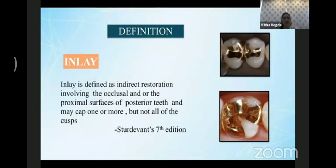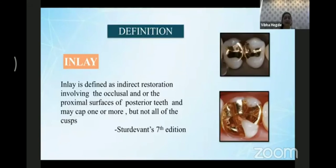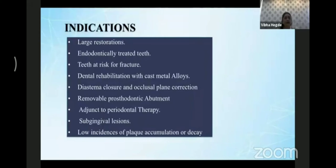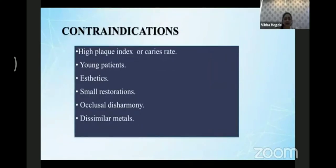An inlay is defined as an indirect restoration involving the occlusal and proximal surfaces of posterior teeth, and may cap one or more but not all of the cusps — that is the most important thing to remember. Indications include large restorations, endodontically treated teeth, teeth at risk for fracture, dental rehabilitation with cast metal alloys, diastema closure, occlusal plane corrections, prosthodontic abutment, adjunct to periodontal therapy, subgingival lesions, and low plaque index. Contraindications are high plaque index, young patients, aesthetic concerns, small restorations, occlusal disharmony, and dissimilar metals.